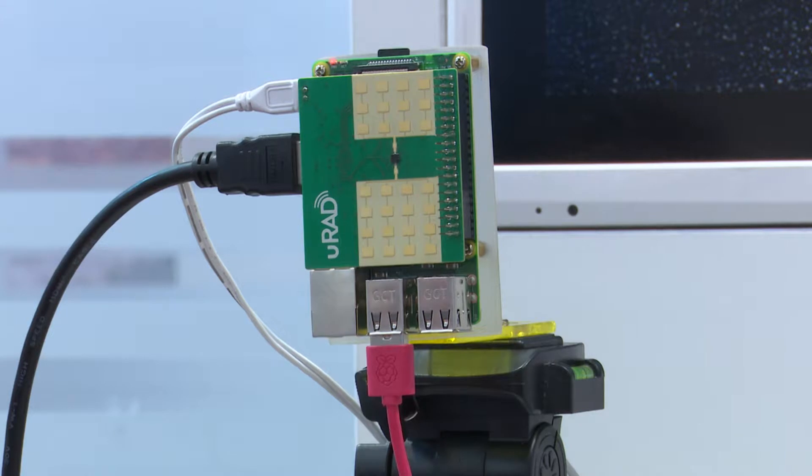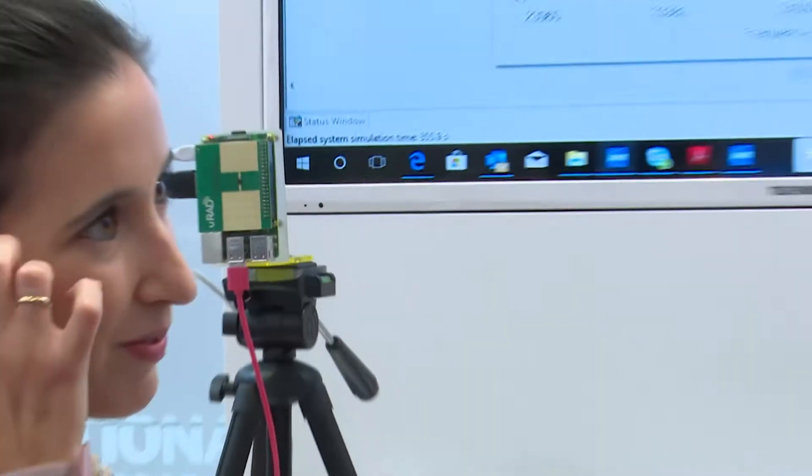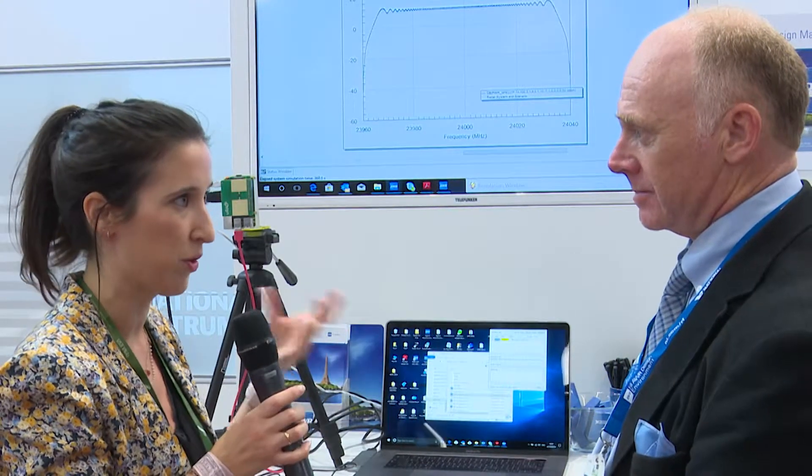So together with National Instruments, we are modulating all this information with your system. So you mentioned Raspberry Pi. So there's an interface to do everything that you just described. We have created the radar system and all the processing of the signals are done within our microchip. But we have also created different libraries to connect with open code systems, such as Arduino or Raspberry Pi. So this way, it is really simple and easy to program the system.